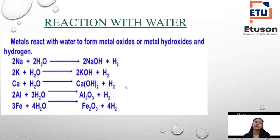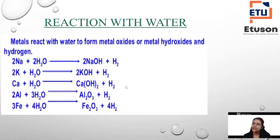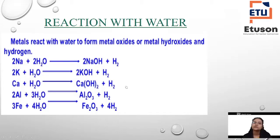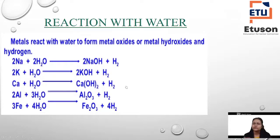If you react potassium with water, you will get potassium hydroxide plus H2. Next, calcium: if you react calcium with water, you get calcium hydroxide plus H2. The formula for calcium hydroxide is Ca(OH)2. You need to remember these formulas. In the case of sodium, potassium, and calcium, hydroxides are formed.